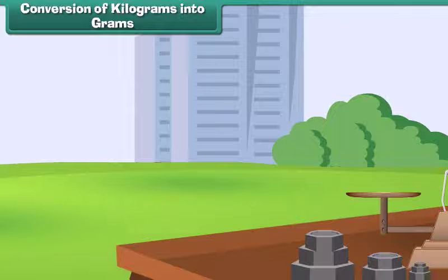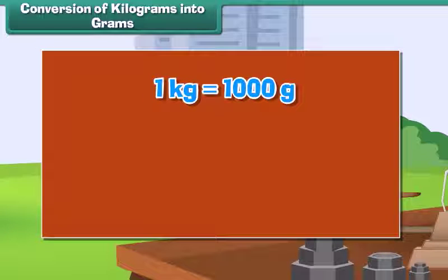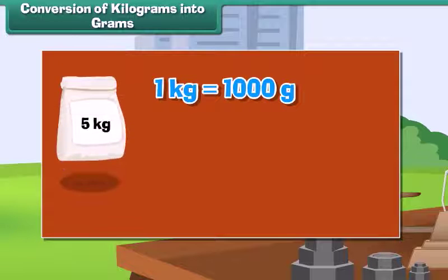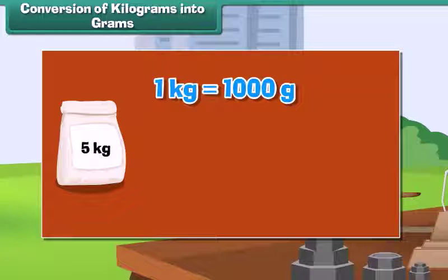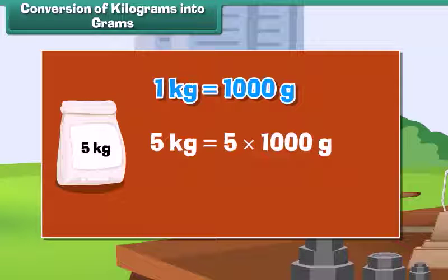Conversion of kilograms into grams: One kilogram is equal to 1000 grams. Therefore, the weight of a 5 kg rice bag can be calculated as 5 kg equals 5 into 1000 grams, which equals 5000 grams.